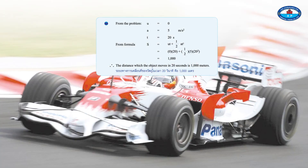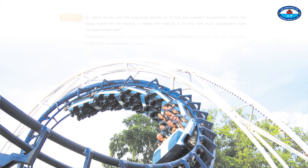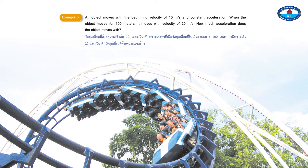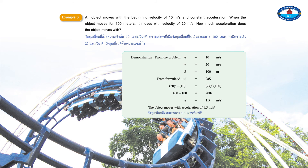The distance that the object moves in 20 seconds is 1,000 meters. Example 8: An object moves with an initial velocity of 10 meters per second and constant acceleration. When the object moves for 100 meters, it moves with a velocity of 20 meters per second. How much acceleration does the object move with? The object moves with a deceleration of 1.5 meters per second squared.